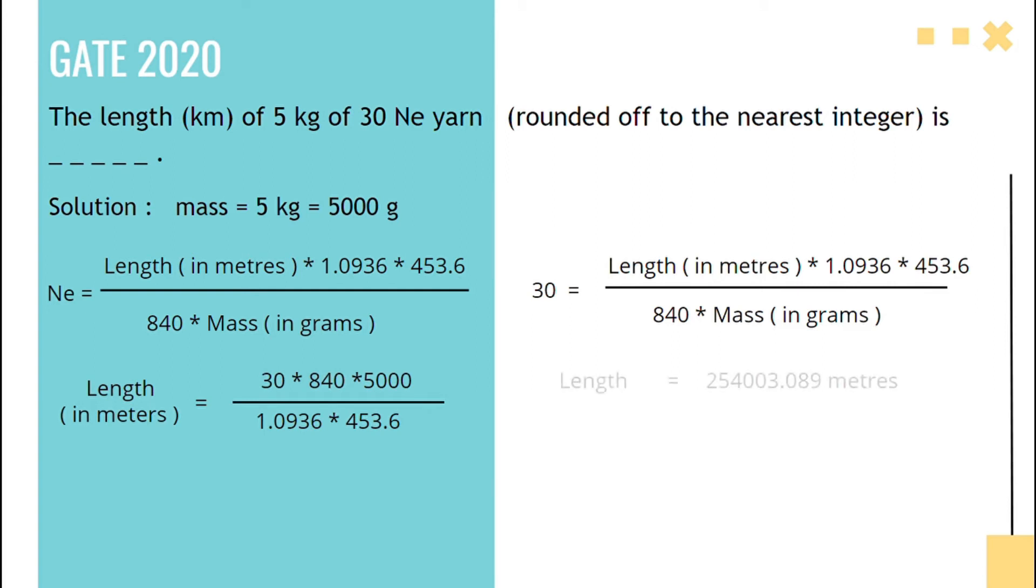To convert to kilometers, the answer becomes 254 kilometers. Next problem is: a twistless polyester yarn has 90 filaments, each of 2 denier. The metric count of the yarn is asked.